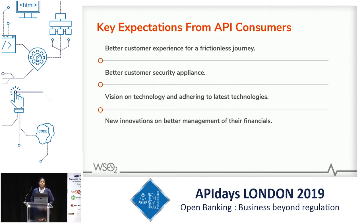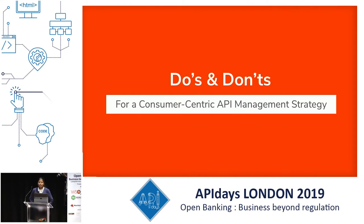From these two levels of API consumers there are four high-level expectations. First, having a better customer experience with a frictionless journey — no showstoppers or blockers during the flow. Second, since PSD2 and open banking demand high security standards, API consumers expect proper security applied throughout. Third, API consumers are looking for evidence of the bank's technology vision and adoption of latest technologies. Fourth, they are interested in how banks will innovate in managing finances.